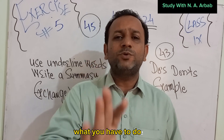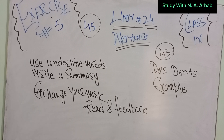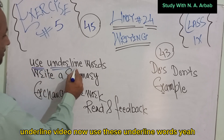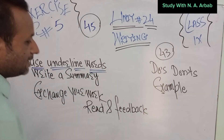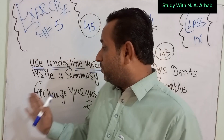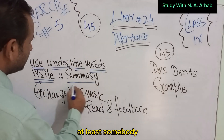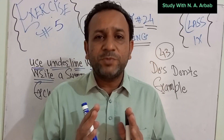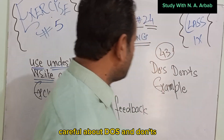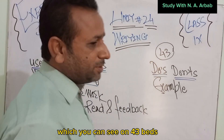What you have to do is underline these things. Use these underlined words and write down a summary. In the summary, you have to be very careful about the dos and don'ts. The dos and don'ts are in the box on page 43.